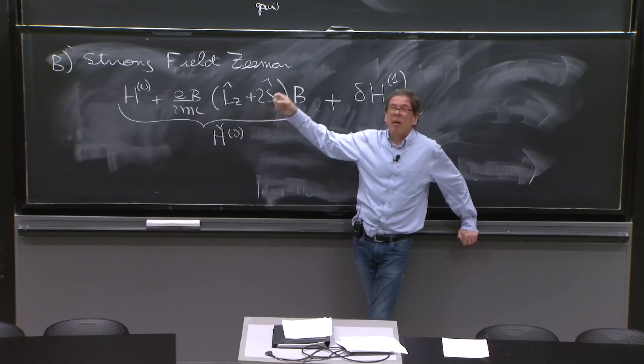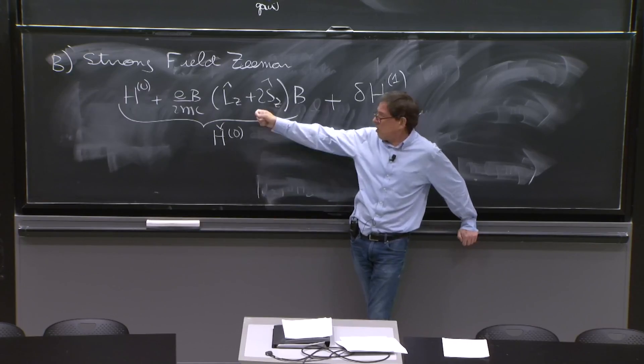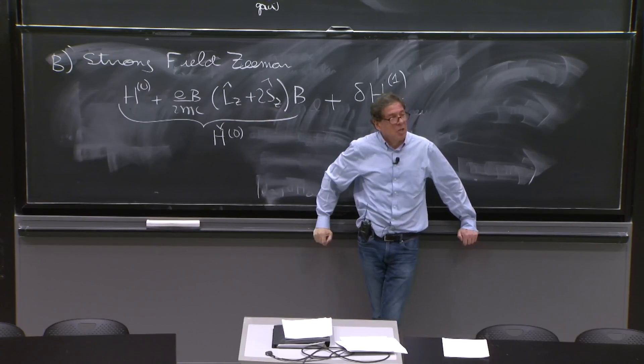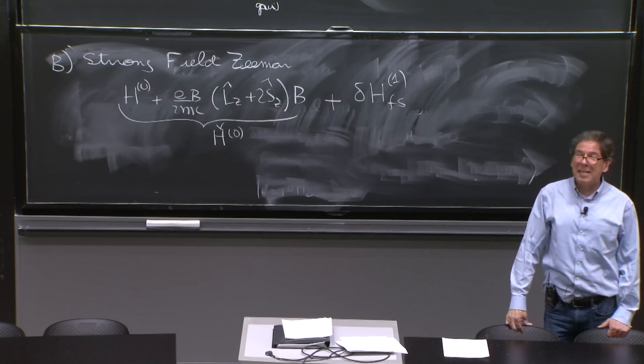h0 is rotationally invariant. So it commutes with any j. And certainly, h0 has nothing for spin. It's a one matrix there. So this commutes with the Hamiltonian.